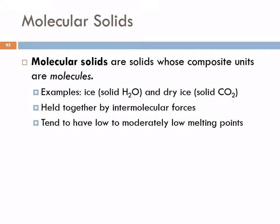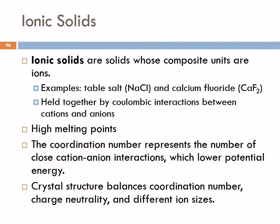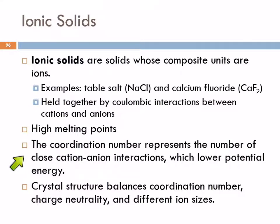Here's a more detailed summary. Molecular solids — examples are ice and dry ice — have discrete molecules held together by intermolecular forces. Ionic solids such as table salt and calcium fluoride are held together by coulombic interactions, the attraction between positive and negative charges of the ions, giving them high melting points. The coordination number represents the number of close cation-anion interactions, which lowers the potential energy and will be different for different types of packing.